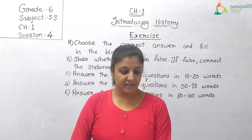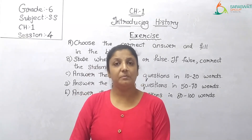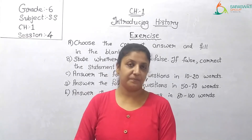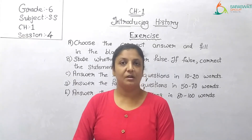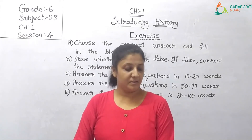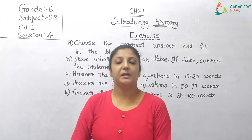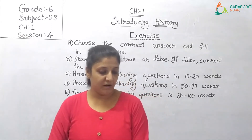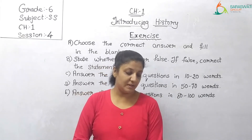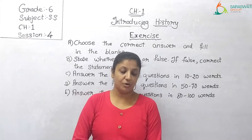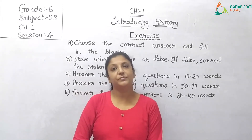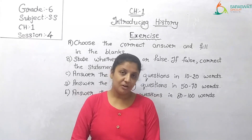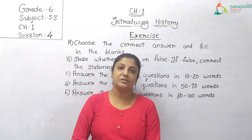Question number 3: Dash is an archaeological source. Options are inscriptions, notebook, book, and puzzle. The answer is option A: inscription. Question number 4: Manuscripts are dash. Options are handwritten records of the past, oral records of the past, painted records of the past, or musical records of the past. The answer is option A: handwritten records of the past.